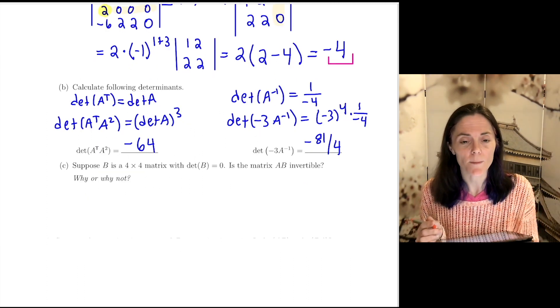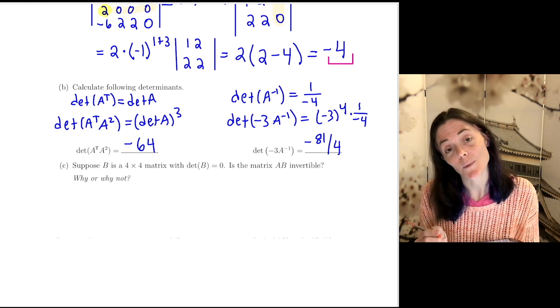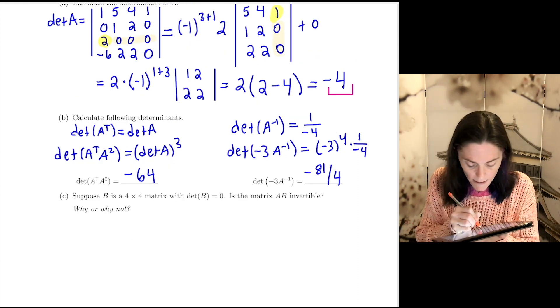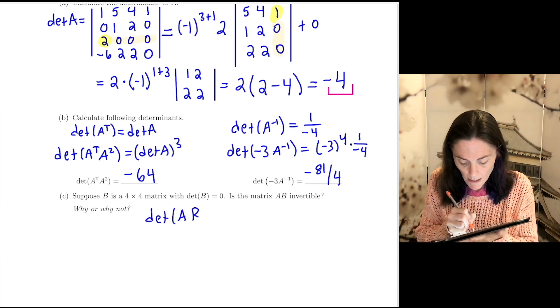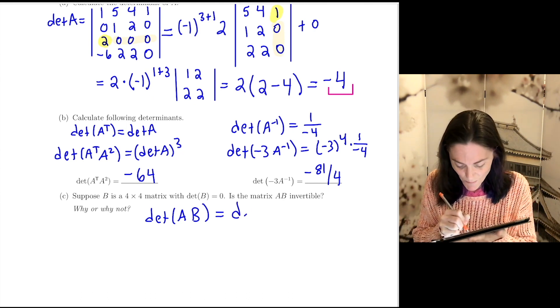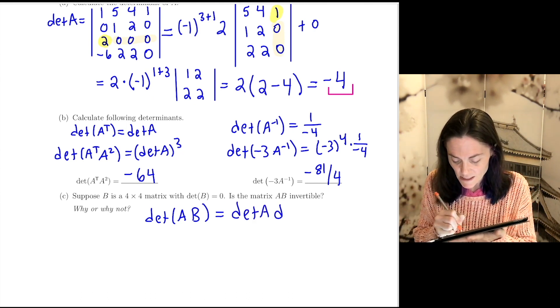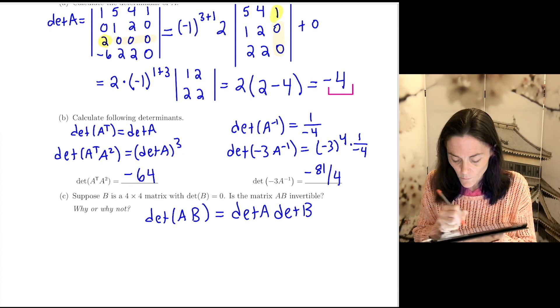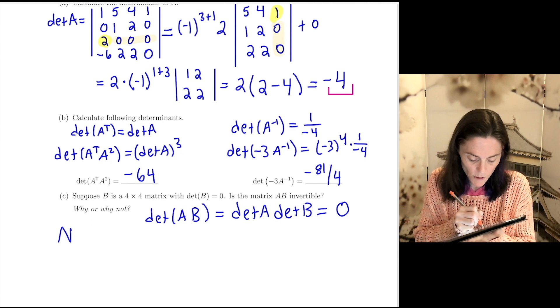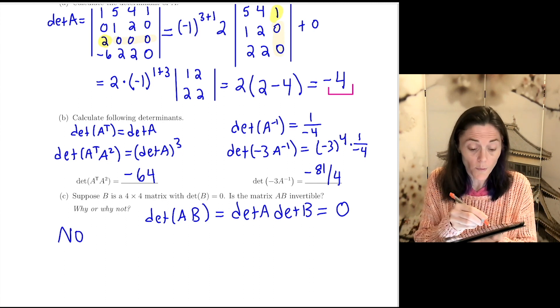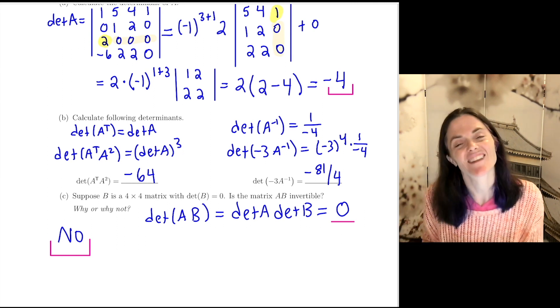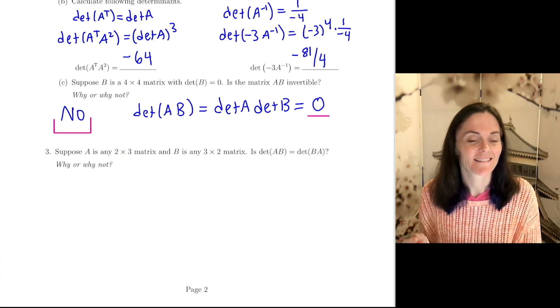Part C. B is a 4 by 4 matrix with determinant of B equal to 0. Is the product AB invertible? The determinant of A times B. They're the same size. And so, this will be determinant A times determinant B, which will be minus 4 times 0, which is 0. So, the answer is no. So, this product A times B is not invertible because its determinant is 0.